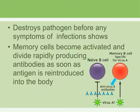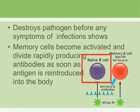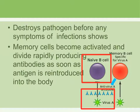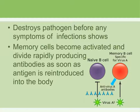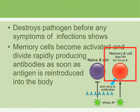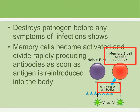Here is a diagram showing the process. The naive B cell is the one chosen as the best fit for the antigen; it then makes antibodies that go and destroy the virus. Later, when memory B cells circulating in the body encounter the same virus again, they quickly produce antibodies and destroy the antigen much faster.